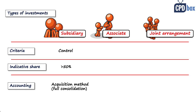For an associate, the investor does not have the ability to exercise control — only significant influence. This is the power to participate, but not to control. An indicator of significant influence is that the investor holds 20% or more of the voting rights of the investee; if it holds less, there's probably no significant influence, but again this is just an indicator. In this situation, the investor applies the equity method of accounting for the associate.